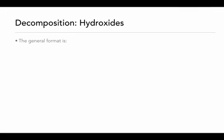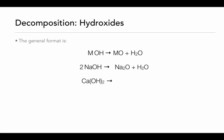The decomposition of hydroxides is very similar. A metal hydroxide will decompose into a metal oxide and water. Sodium hydroxide decomposes into sodium oxide and water. Calcium hydroxide decomposes into calcium oxide and water. Aluminum hydroxide decomposes into aluminum oxide and water — since this reaction is not balanced as written, we must balance it. So in the decomposition of metal hydroxides: metal hydroxide gives you metal oxide and water.